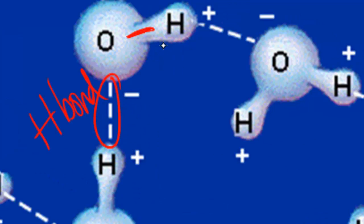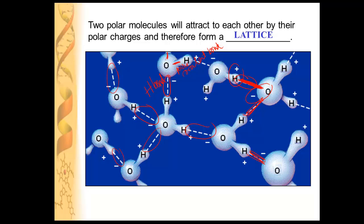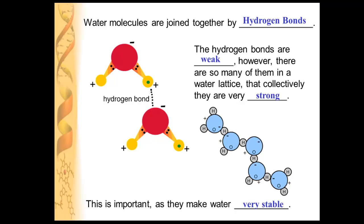This bond here is a polar covalent bond, and when water molecules are collectively together like that, they form what's called a lattice. Water molecules are joined by hydrogen bonds. Those hydrogen bonds are quite weak individually, but when they are all together in a lattice, they're very strong — collectively quite strong. And this is important because it makes water extremely stable.